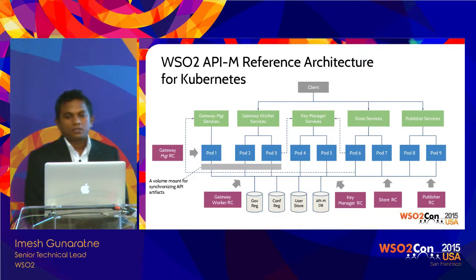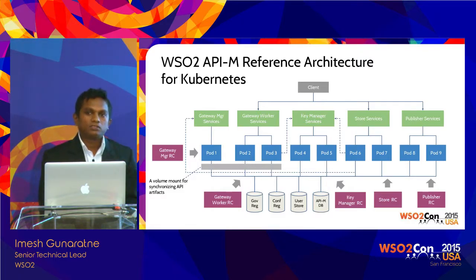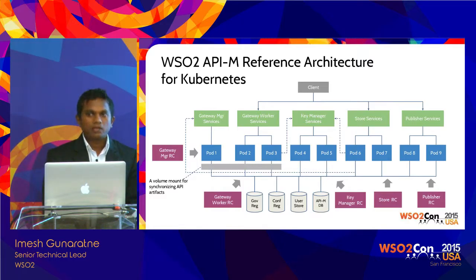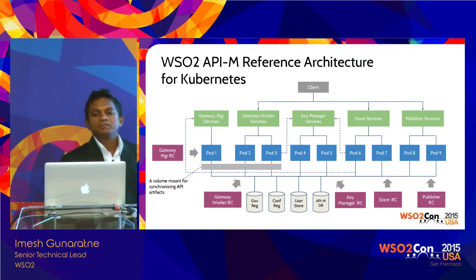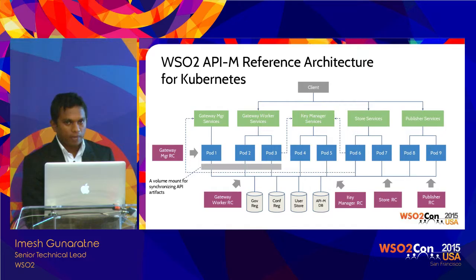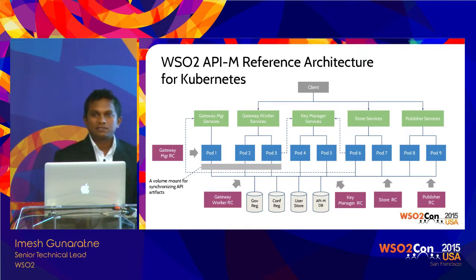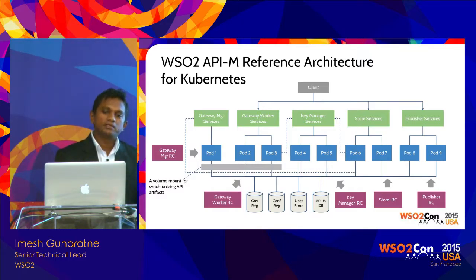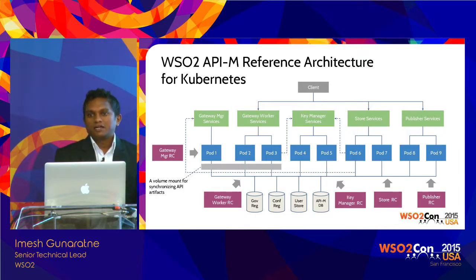With API Manager, there is a requirement to distribute runtime artifacts. Whenever we create an API in the publisher and publish it, the publisher makes a call to the gateway manager node saying there's a new API — please deploy this API. That API artifact then needs to get distributed in the API gateway worker cluster, since it is created at runtime on the fly.